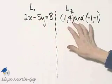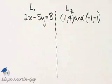Here's L sub 1. Here's L sub 2. We want to know if the graphs are parallel, perpendicular, or neither. To see, let's find the slope of each.